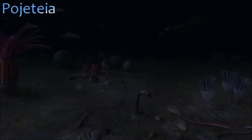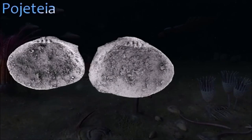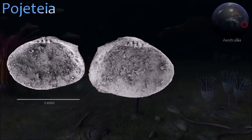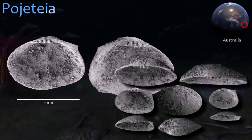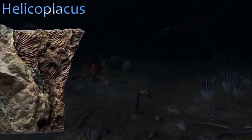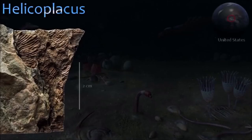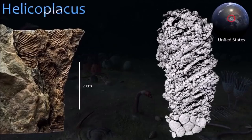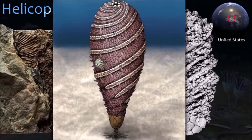Early Cambrian bivalves are very rare — only two genera are known. Pojetia is currently the oldest bivalve ever discovered, with an almost circular shell, well-defined beaks, and a straight hinge line, with five or six teeth and sockets in each valve. Helicoplacus was a bizarre echinoderm representing an early and ultimately unsuccessful body plan — unlike other echinoderms it lacked radial symmetry of any kind. Tiny plates were arranged spirally around its pear-shaped shell, not fused together, allowing the body to expand and contract.